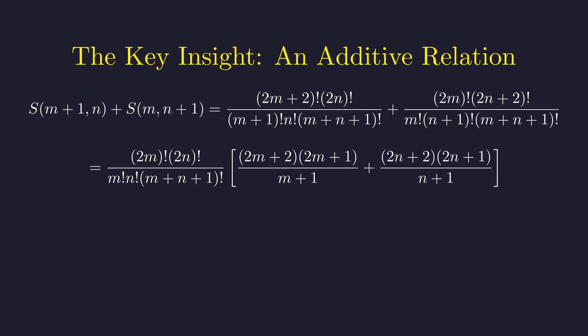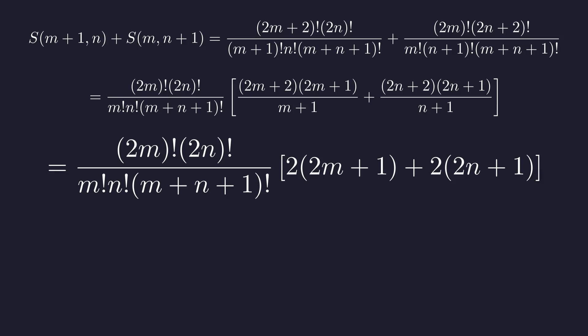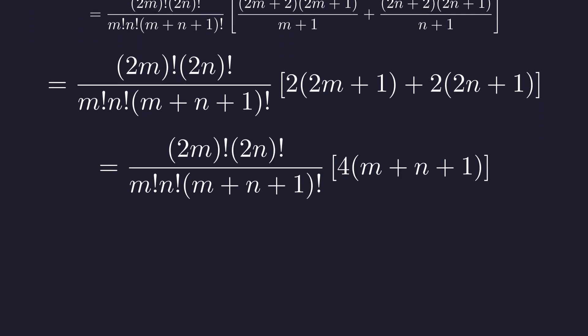The first thing we can do is factor out this common piece from both terms. When we do that, we're left with these two fractions in the brackets. Now watch what happens when we simplify those fractions. The algebra works out really nicely, and we get 2 times the quantity 2m plus 1 plus 2 times the quantity 2n plus 1.